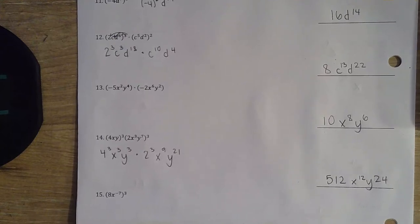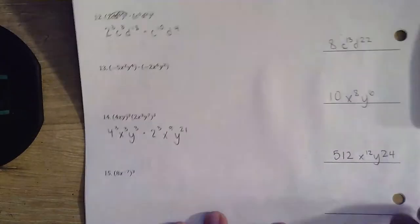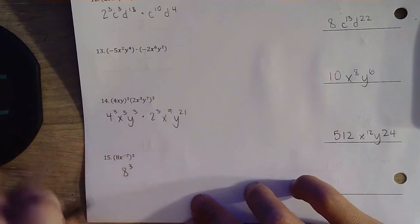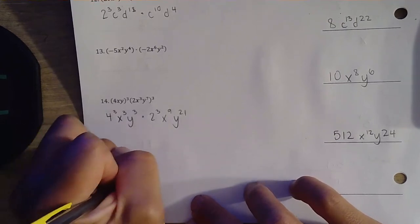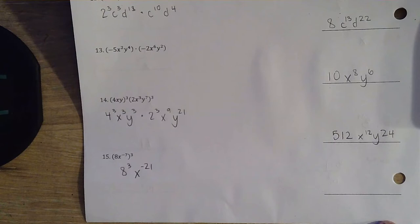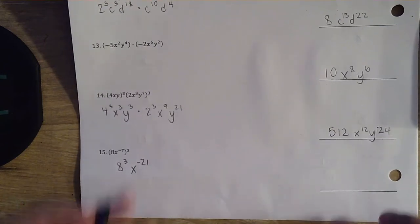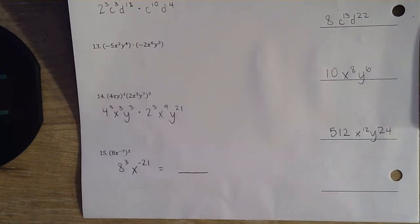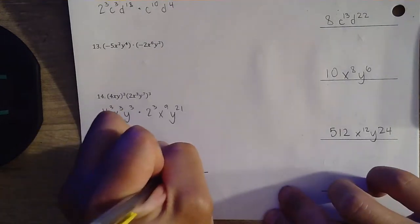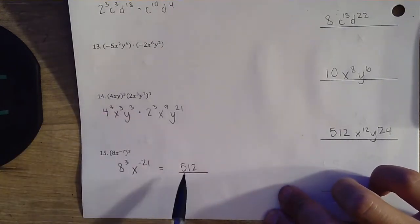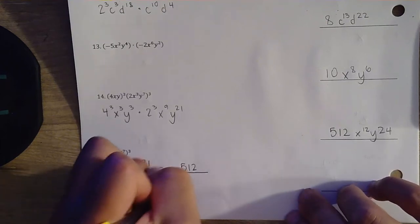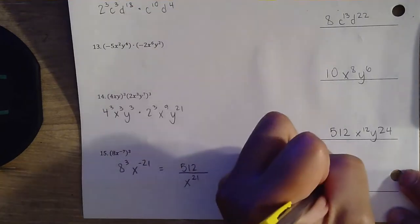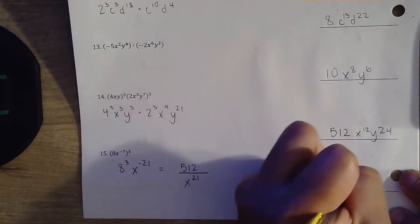Question number 15. We have an exponent on the outside, so we distribute that exponent to each of those: 8 to the 3rd power, x to the negative 21st. We have a negative exponent, so make a fraction. 8 to the 3rd power is 512 — that stays in our numerator. But that negative exponent, we put it down in our denominator. That's our final answer: 512 over x to the 21st.